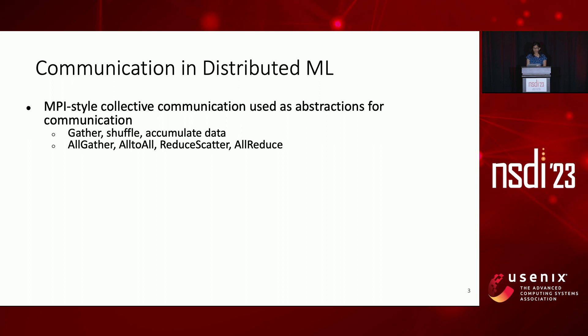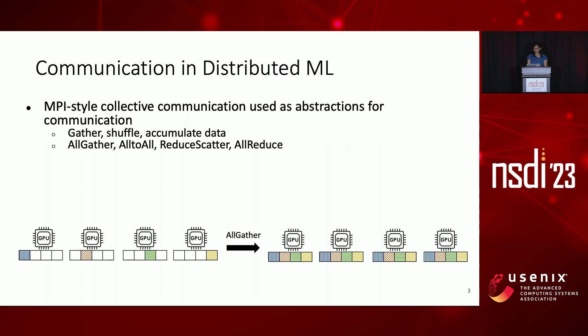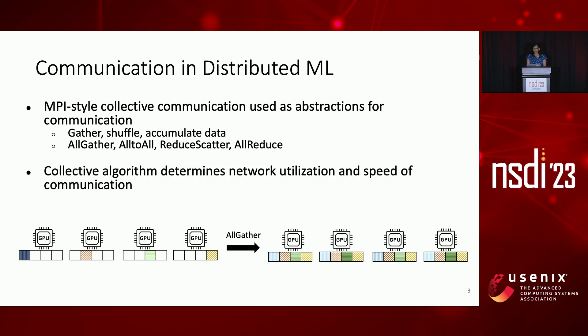All gather, all reduce, reduce scatter, and all-to-all are the main collectives used in distributed ML. This is what an all-gather collective looks like — it gathers the data present at all GPUs to every other GPU. The exact algorithm to implement the collective communication on the hardware determines how well the network is utilized and thus the speed of the communication. However, designing efficient collective algorithms is hard.